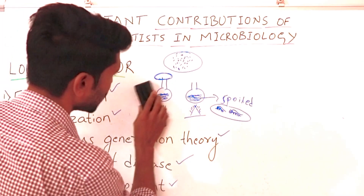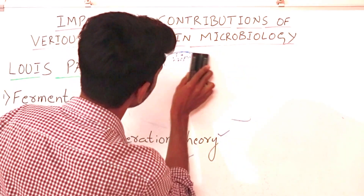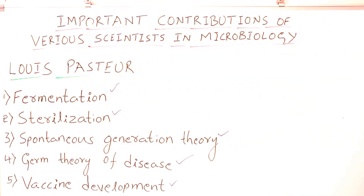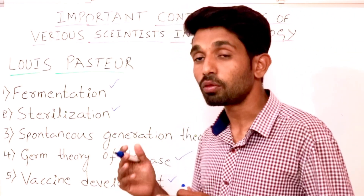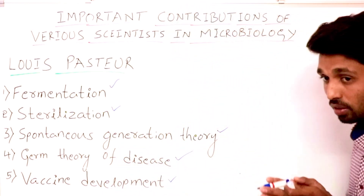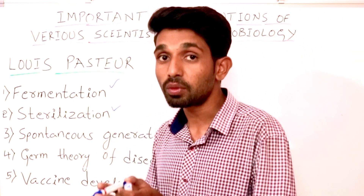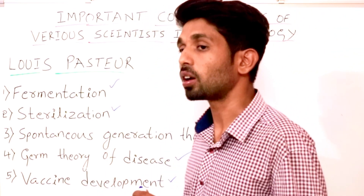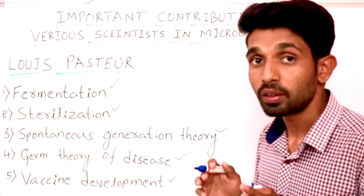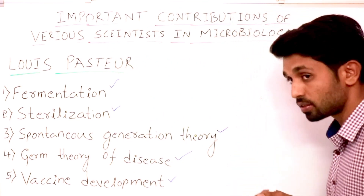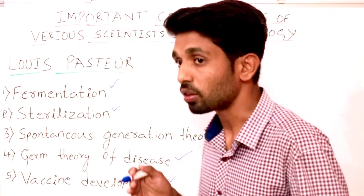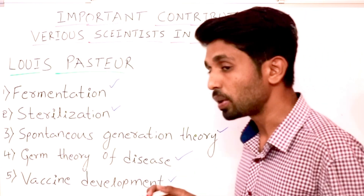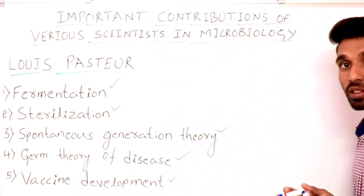Now we will study the germ theory of disease. The germ theory of disease states that the growth and reproduction of particular harmful bacteria within a host cell can cause disease. It also says that if we prevent or stop the growth and reproduction of the particular harmful bacteria, we can completely and successfully get cured.